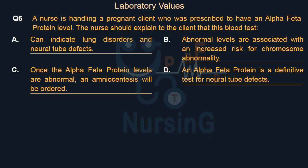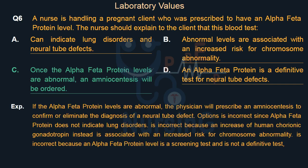The right answer is Option C: Once the alpha-feta protein levels are abnormal, an amniocentesis will be ordered. If the alpha-feta protein levels are abnormal, the physician will prescribe an amniocentesis to confirm or eliminate the diagnosis of a neural tube defect. Alpha-feta protein does not indicate lung disorders. An increase of human chorionic gonadotropin is associated with an increased risk for chromosome abnormality. Alpha-feta protein is a screening test, not a definitive test.